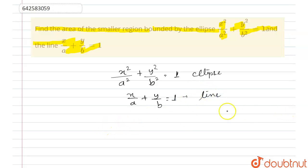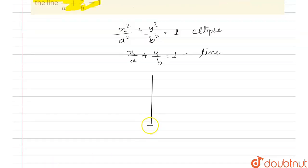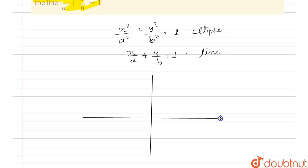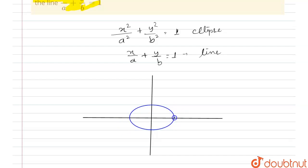First of all, we have to draw these curves on the coordinate axis. This is our y-axis and this is our x-axis. We draw the curve of the ellipse. When you put y = 0, this point will be (a, 0); this point will be (-a, 0). This point will be (0, b); this point will be (0, -b).